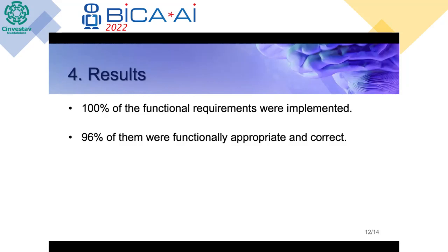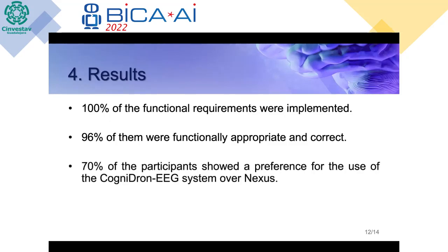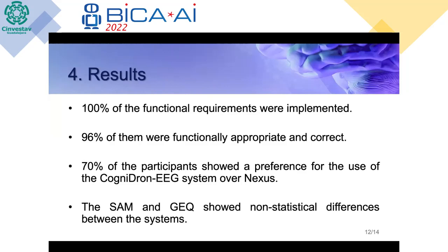96% of the functional requirements were correctly implemented and then corrected to achieve 100%. The modules that had areas of opportunity were the managing of reports and the control of the drone, but these were all corrected. Another result was that 70% of participants showed a preference towards the CogniDrone EEG system over the Nexus, confirming our hypothesis that the drone would be a distinctive feature. The SAM and GEQ showed no statistical differences between the systems, suggesting CogniDrone has comparable quality to other commercial systems.